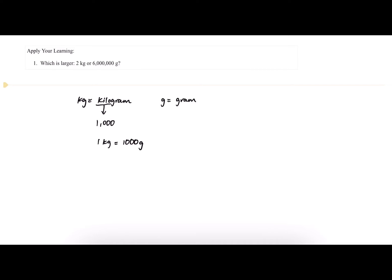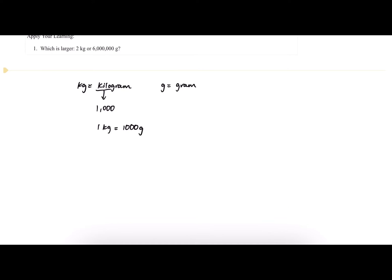We can set up a dimensional analysis equation where we start with our 2 kilograms. We're going to multiply it by the ratio of kilograms to grams. In the end, we want to find how many grams it's equivalent to. We want to cancel out our kilogram unit and replace it with the gram unit.